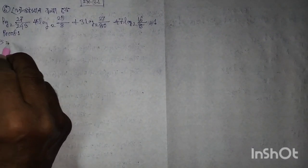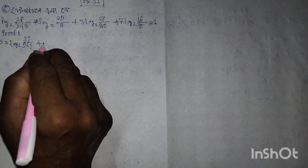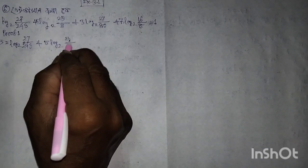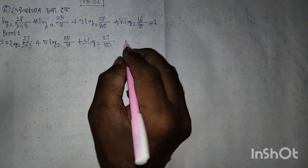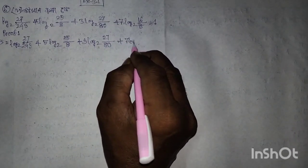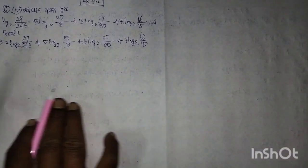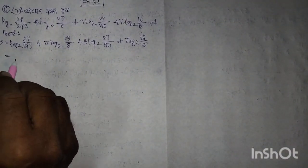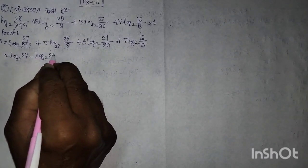Left hand side is equal to log 2 of 27 by 243, plus 5 log 2 of 25 by 8, plus 3 log 2 of 27 by 80, plus 7 log 2 of 16 by 15. This equals log 2, 27, minus log 2, 243.